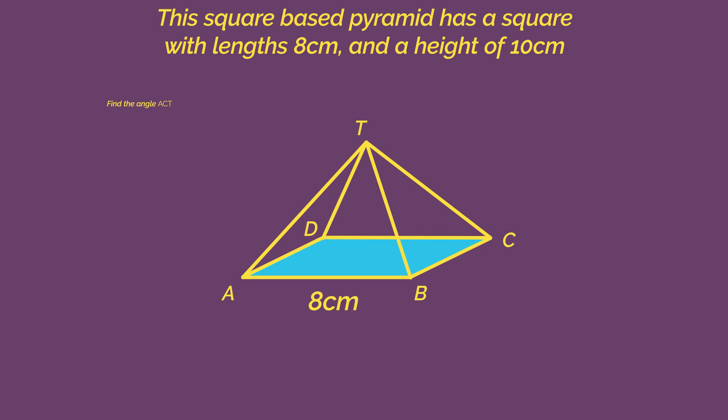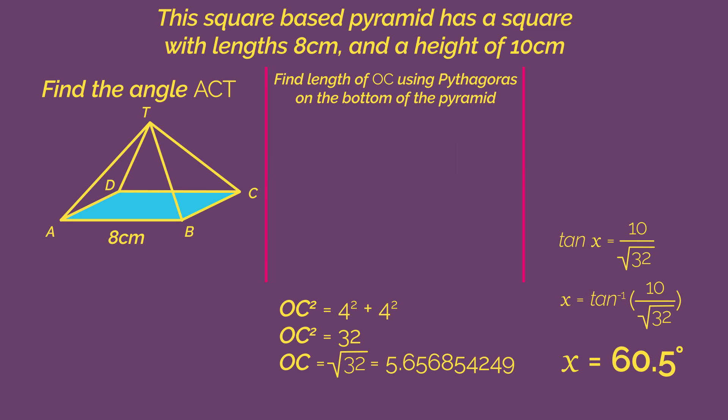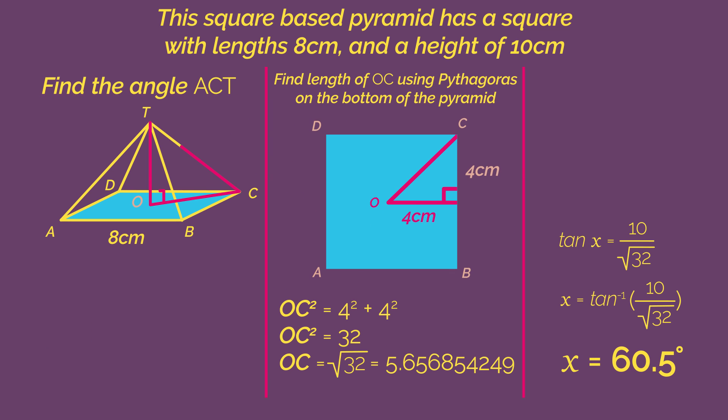But what if the question had asked for angle ACT? What right angle triangle would you have used? See if you can find ACT. Pause the video, give it a go and click play when you're ready. Did you get 60.5 degrees? Did you use this right angle triangle?